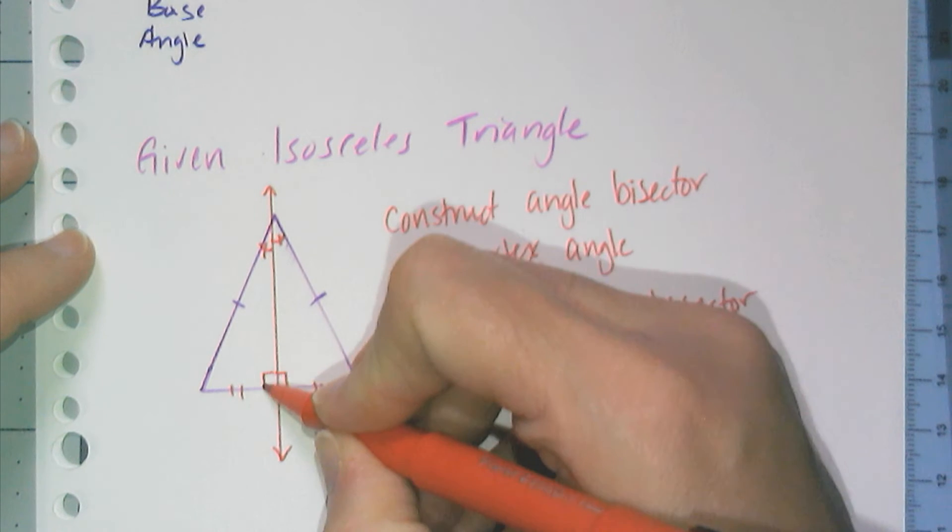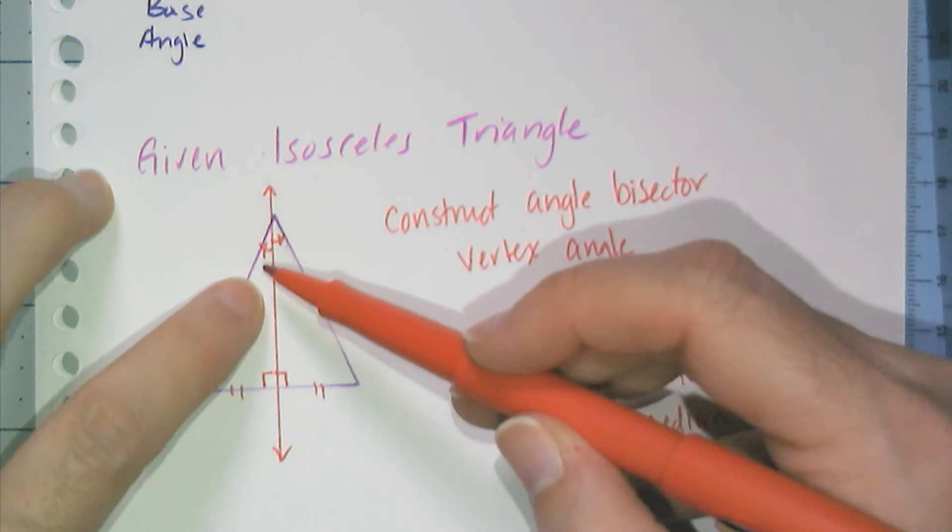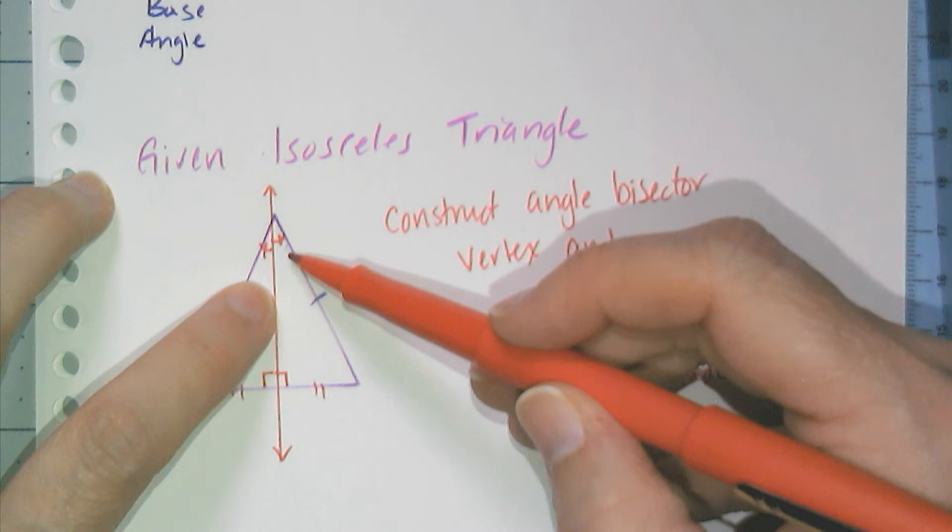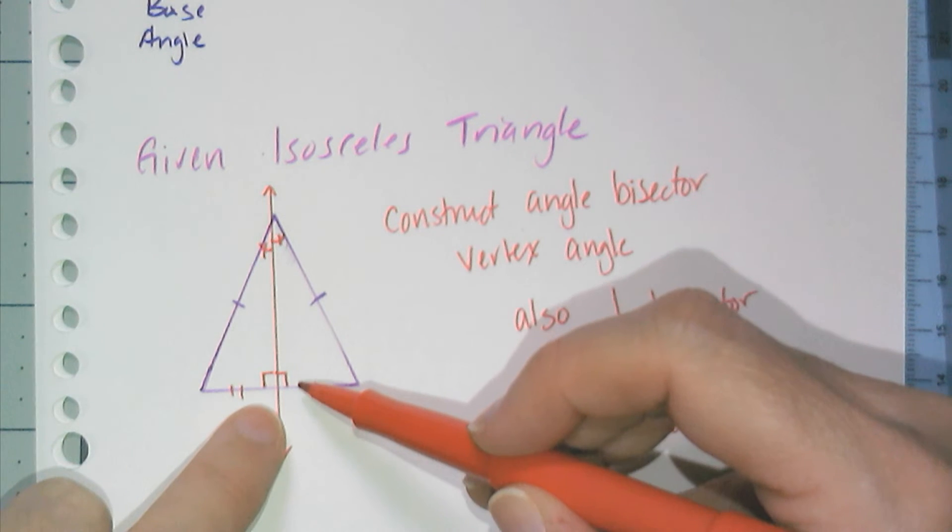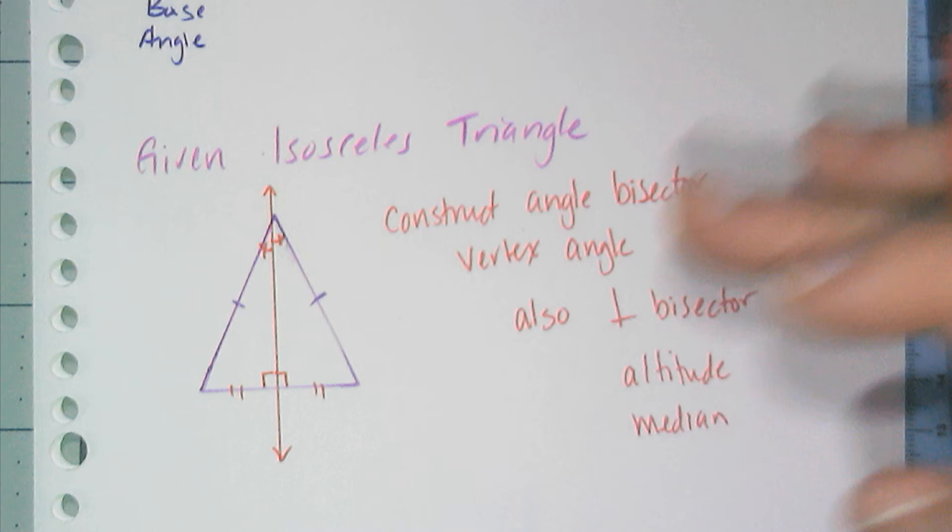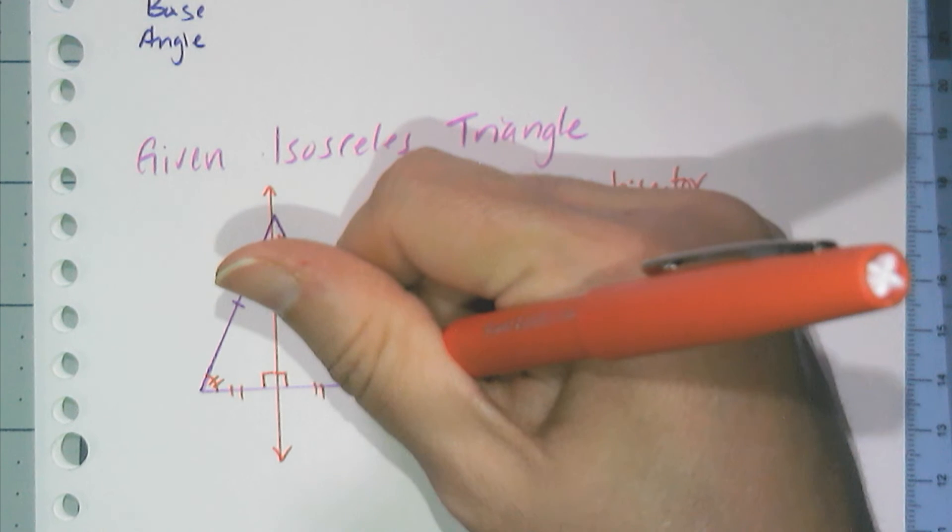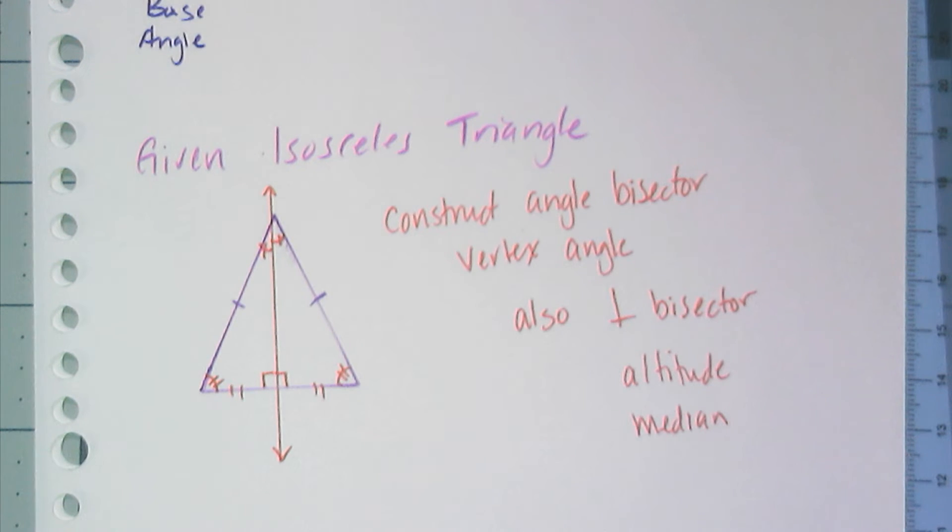And if I know that this was an angle bisector, that angle is congruent to that angle. And these are both right angles. By that really simple conjecture, that third angle conjecture, by the third angle conjecture, I know that this angle has to be congruent to that angle there.